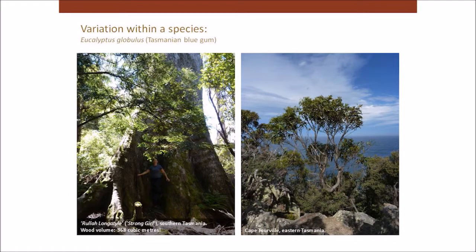The Tasmanian blue gum is one of the best known eucalypts and a really good example of intraspecific variation. In the wild where it grows, it can vary from the tree on the left here — one of the biggest trees in Australia, with an estimated wood volume of 368 cubic metres — to the one on the right, also growing wild in Tasmania right on the coast, which is only a few metres tall. Part of the reason for that variation is genetic, and part of it might be environmental.